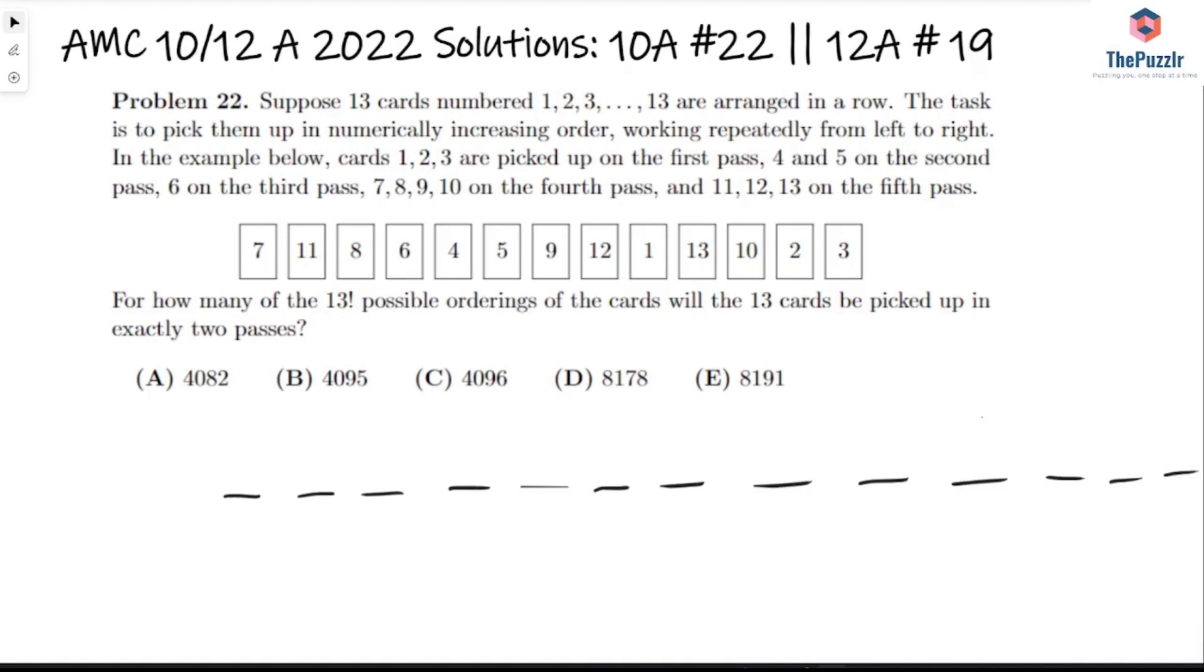We're given 13 cards numbered 1 to 13 that are arranged in a row and the task is to pick them up in numerically increasing order working repeatedly from left to right. So for example, in the example that they give we have cards 1, 2, 3 picked up on the first pass, 4 and 5 on the second pass, 6 on the third pass, 7, 8, 9, 10 on the fourth pass, and then the remaining 11, 12, 13 on the fifth pass.